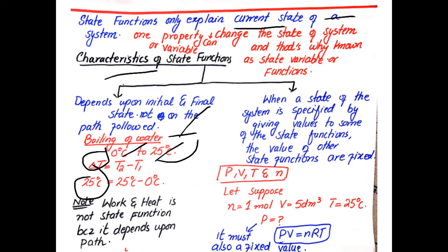The second characteristic of state functions: when the state of a system is specified by giving values to some state functions, the values of other state functions are automatically fixed. For example, using the equation of state PV = nRT — if you have one mole of gas at a volume of 5 dm³ and temperature of 25°C, the pressure is automatically determined as a fixed value.